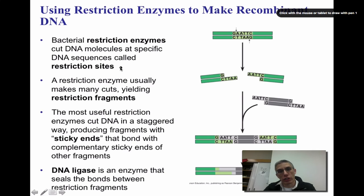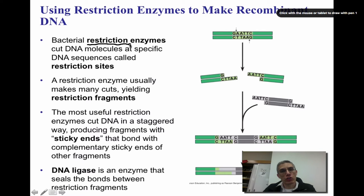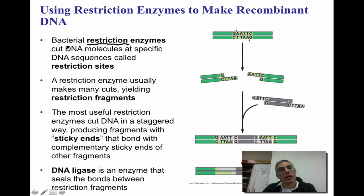In the previous screen we looked at the three basic steps of cloning that DNA. In order to clone that DNA, what we need to be able to do is insert that DNA into the bacterium plasmid. We're going to use special enzymes called restriction enzymes, which are going to act like scissors. They're going to cut the DNA molecule at very specific DNA sequences, and we call these restriction sites.